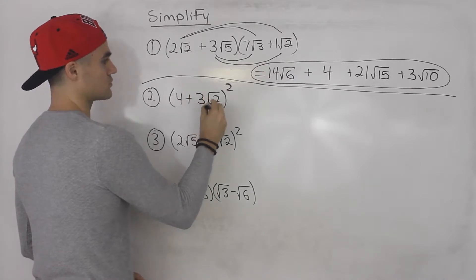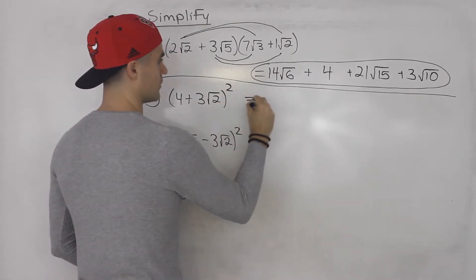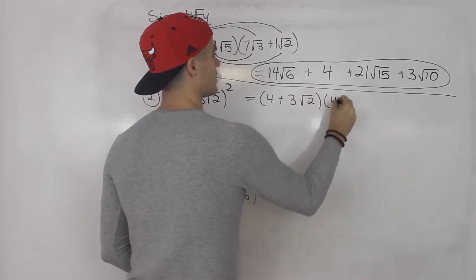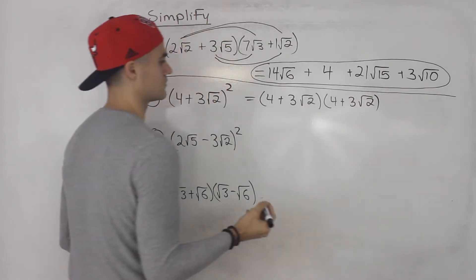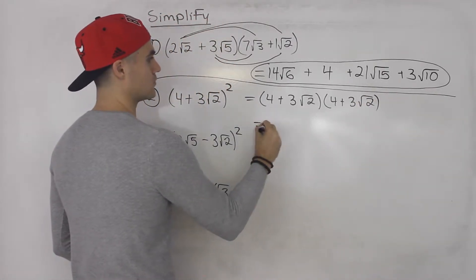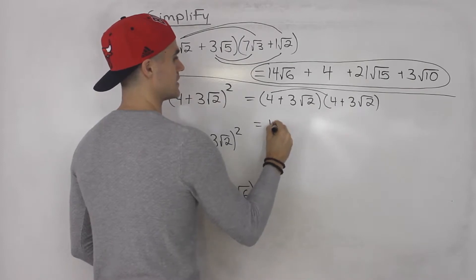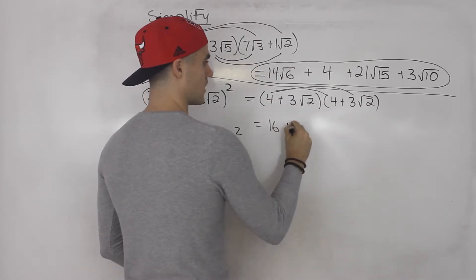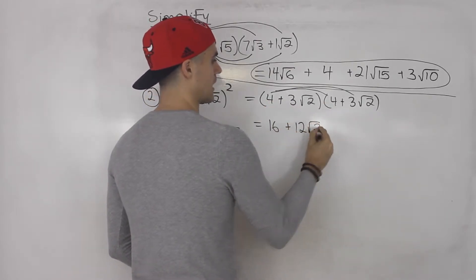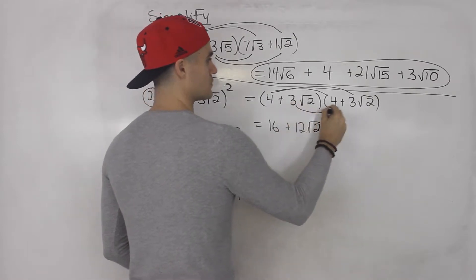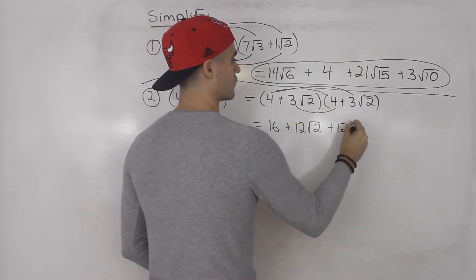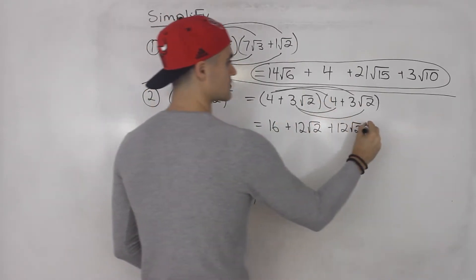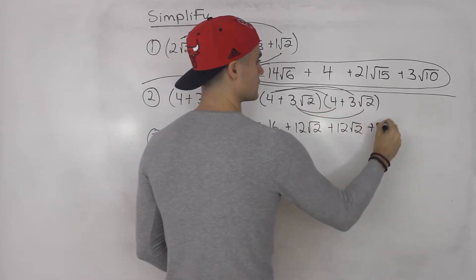For number 2, we have (4 + 3√2) squared. We rewrite that as (4 + 3√2) times (4 + 3√2), and then we foil it. So 4 times 4 gives us 16. Then 4 times 3√2: 4 times 3 gives us 12, and we keep the √2. Then 3√2 times 4 gives us 12√2 again. And then 3√2 times 3√2: 3 times 3 gives us 9, and √2 times √2 gives us 2.